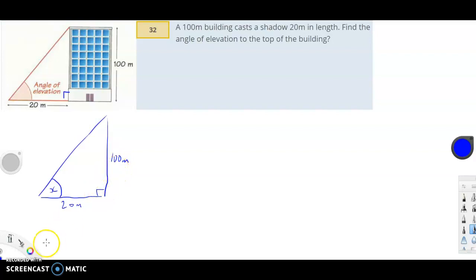This side is the opposite side to angle x, and this side is the adjacent. We need a trig ratio that works with both the opposite and the adjacent, so it's going to be tan.